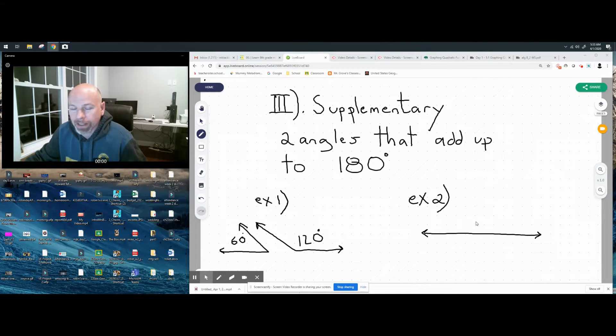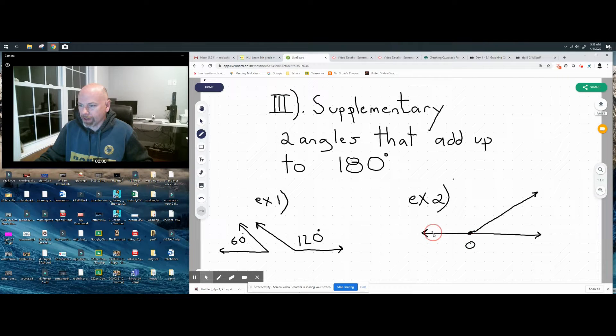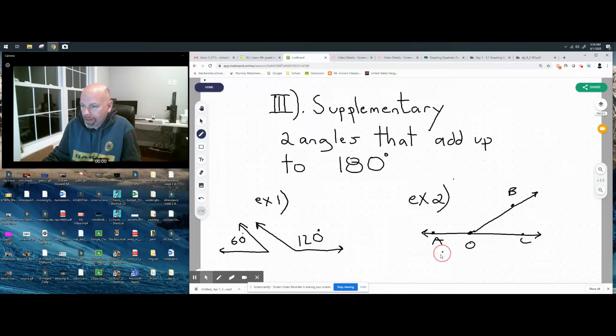Example two, the way it's presently drawn, this would not be supplementary because there's only one angle that equals 180 - that's one straight line. You need two angles. So what you'll see them do with this type of math - they'll introduce another line, and they may put some letters on here. Now if I were to ask you which two angles are supplementary in example two, you would have to tell me angle AOB - so that's this angle - and we need this one, which is BOC.